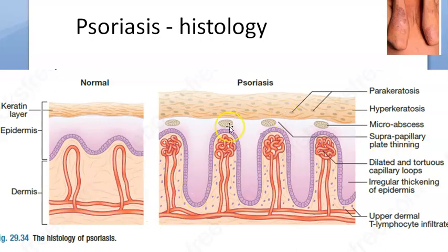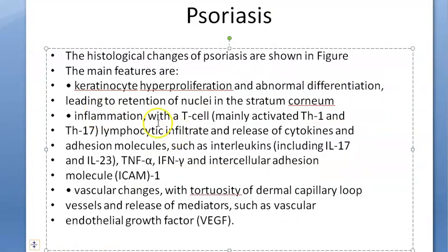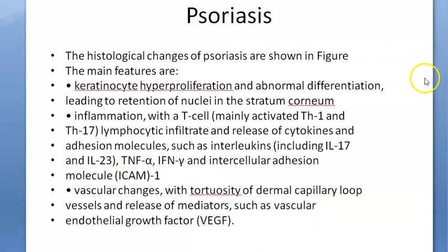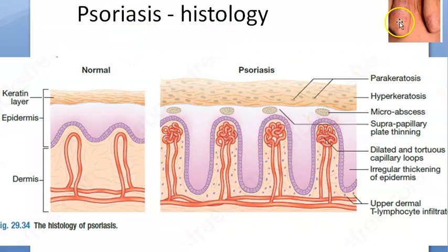There are also some micro abscesses below the keratin layer, indicating inflammation. There are many markers of inflammation present: lymphocytes, cytokines, interleukins, tumor necrosis factor alpha, IFN-gamma, intercellular adhesion molecules, and VEGF — all of these will be present in psoriasis. So this is the histology of psoriasis.